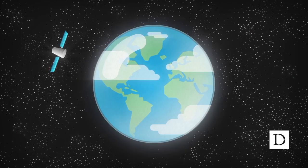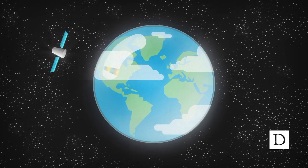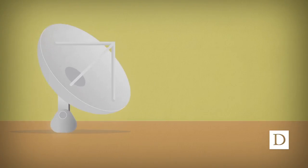To receive a signal from a geostationary satellite 23,000 miles away, you used to need a big dish antenna.